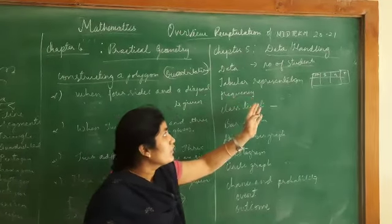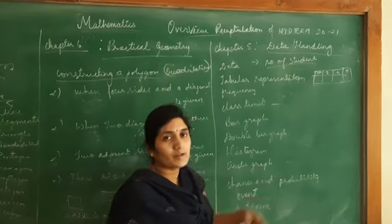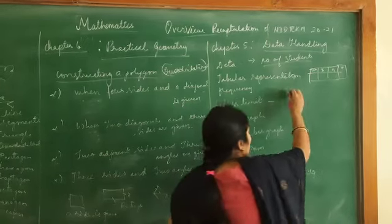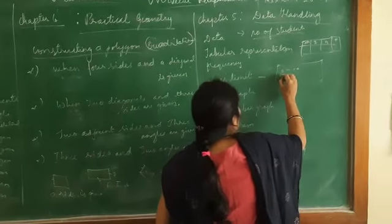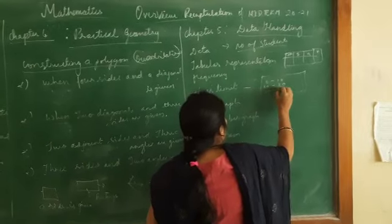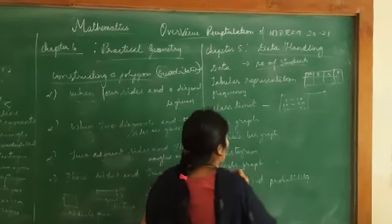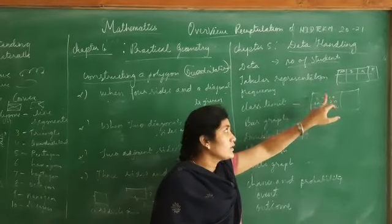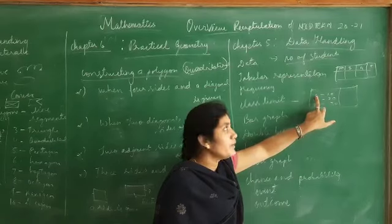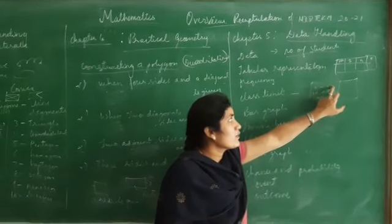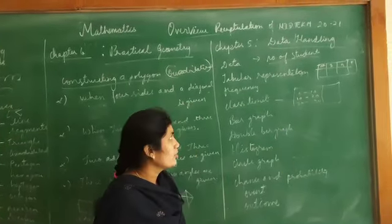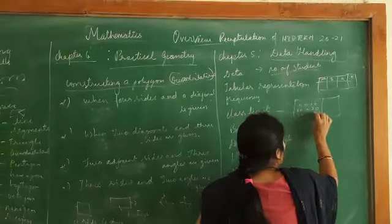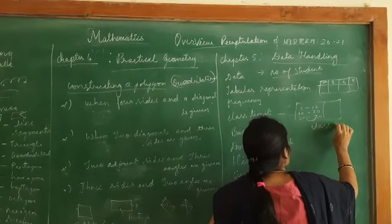Frequency is the number of objects or occurrences that a class contains. Class limit: for example, class intervals are 0 to 10, 10 to 20, 20 to 30. Here 0 is the lower limit and 10 is the upper limit. The minimum score is the lower limit and the maximum score is the upper limit. The difference between these two limits is called the class width or class size.